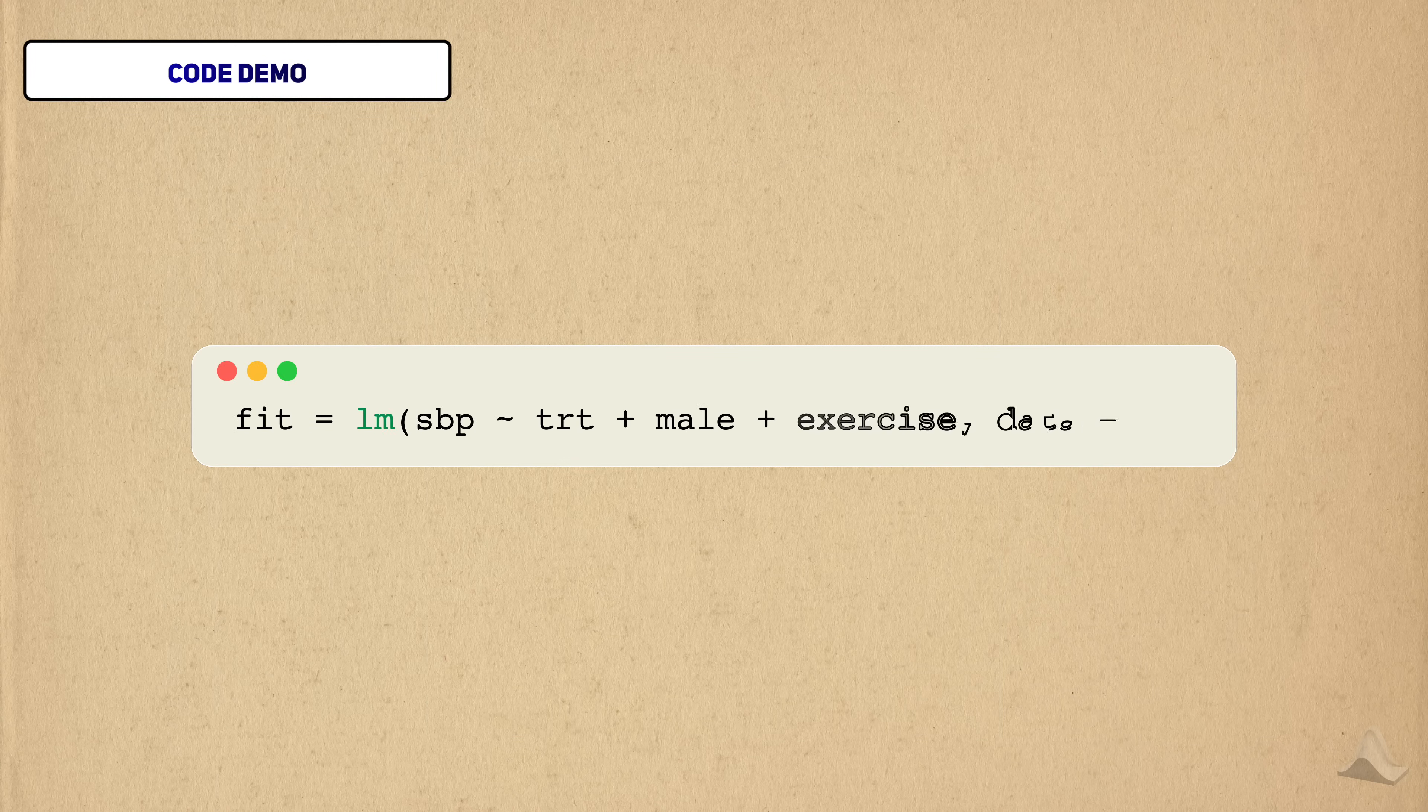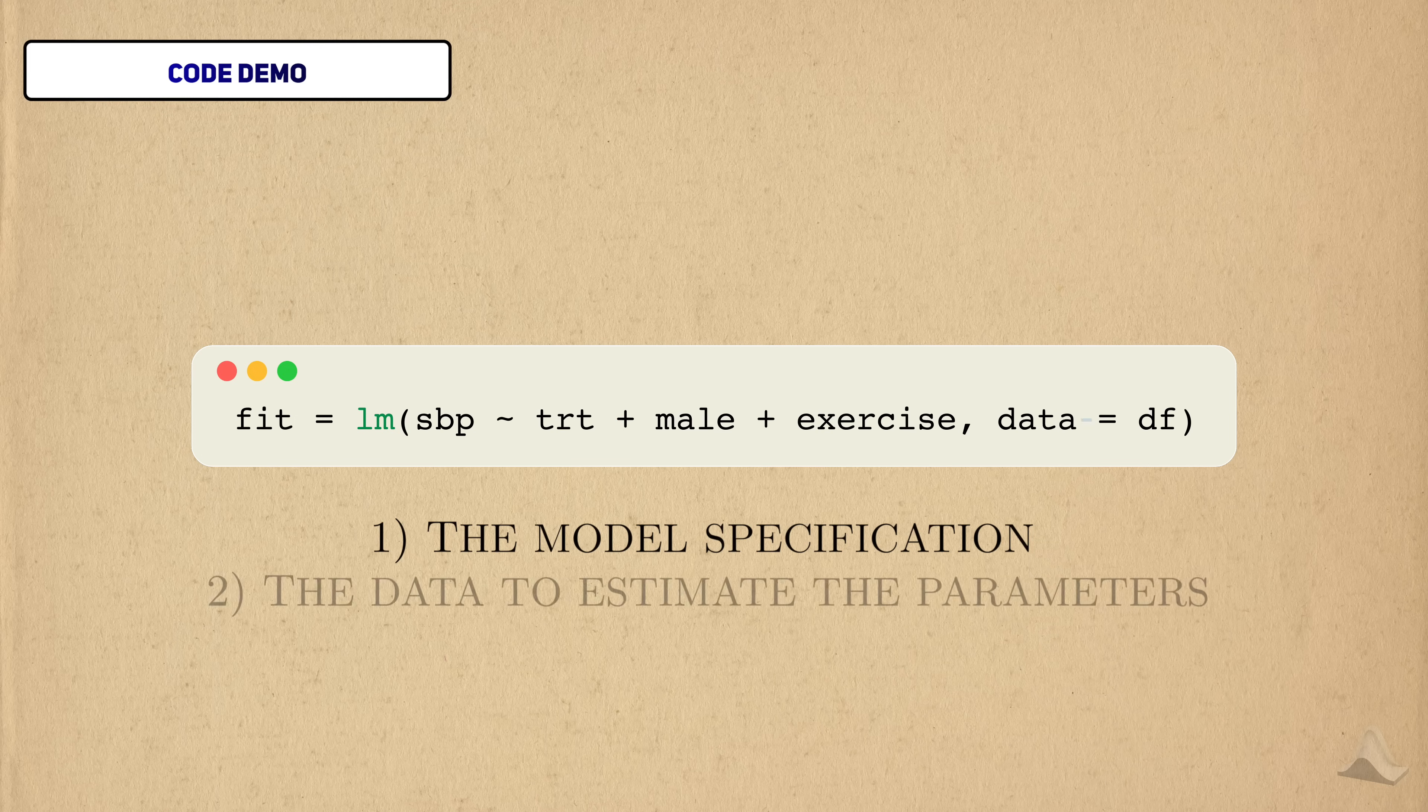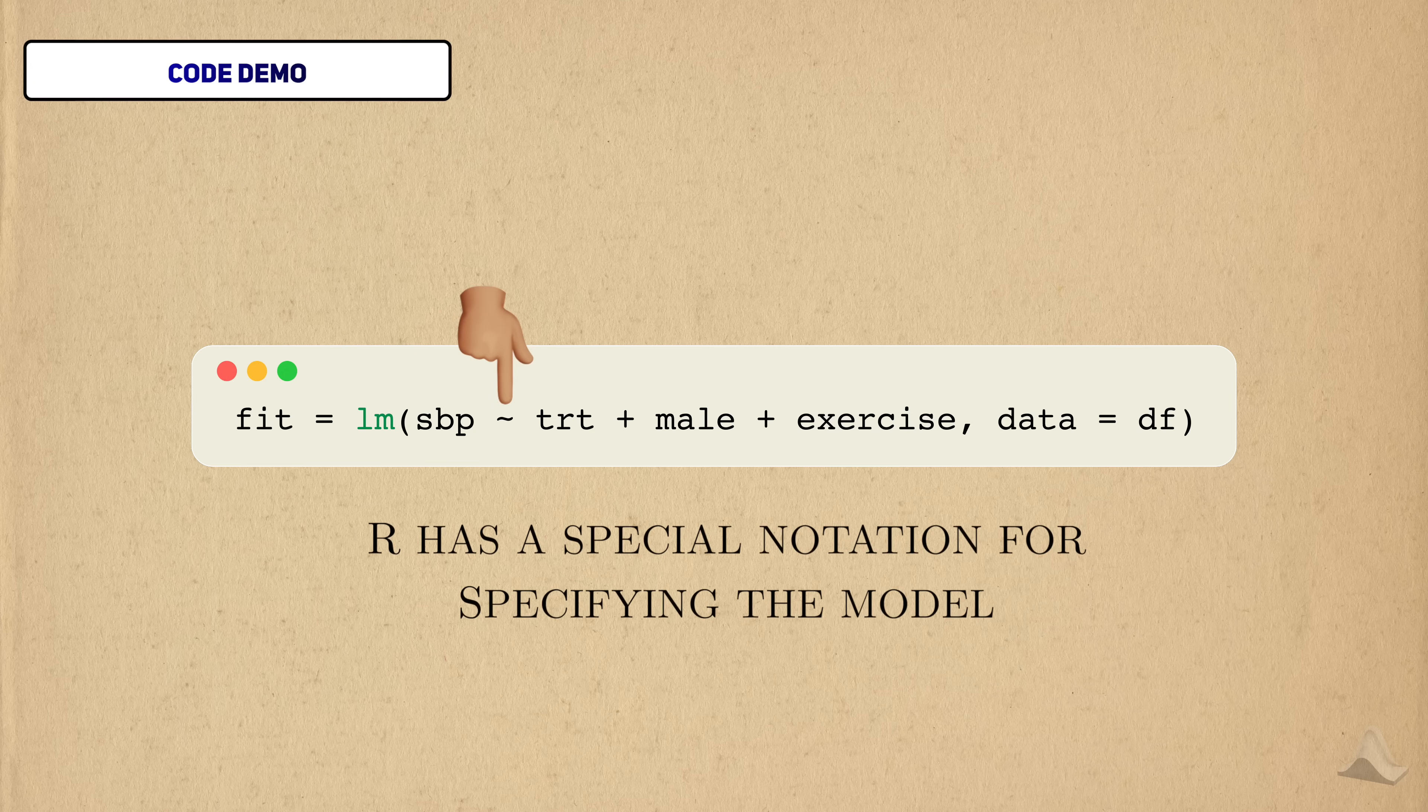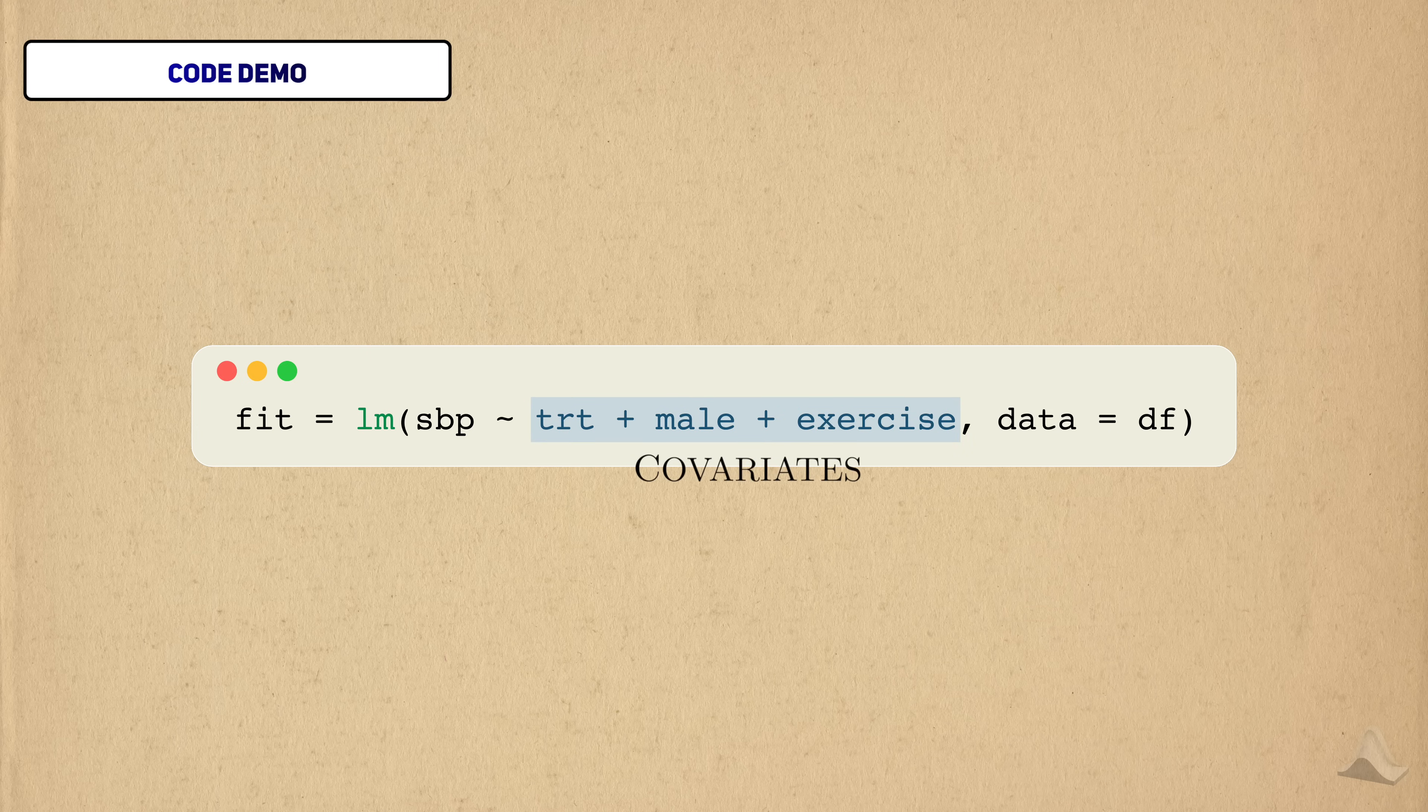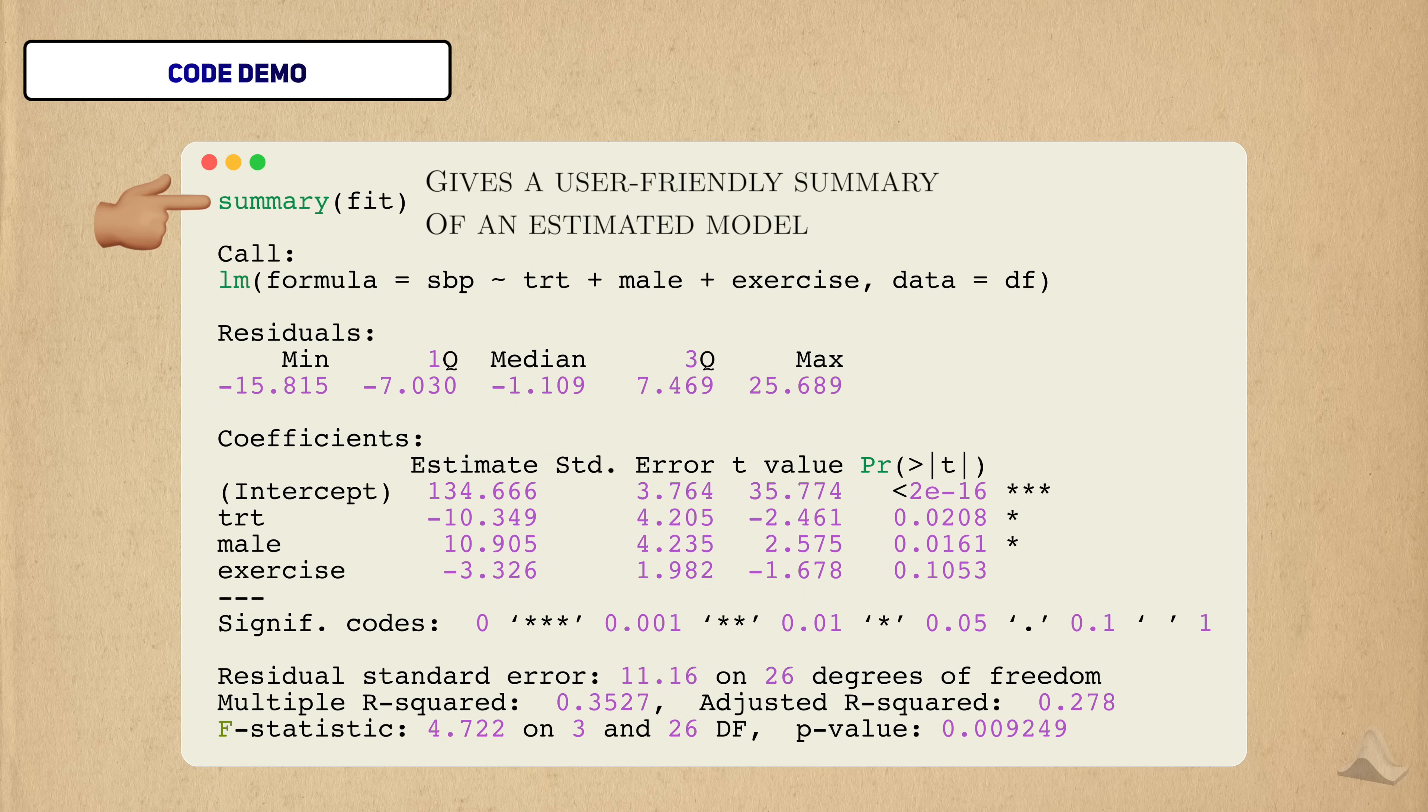To run the linear regression, we need to use the lm function. For a standard linear model, we only need to specify two things, the model specification and the data for estimating the parameters. R has a special notation for writing formulas using this tilde sign here. The outcome is on the left side, and we write out the non-intercept terms on the right. The lm function automatically assumes we want an intercept, so we don't have to write that out. If we run this and get a summary of the model, we'll see this.